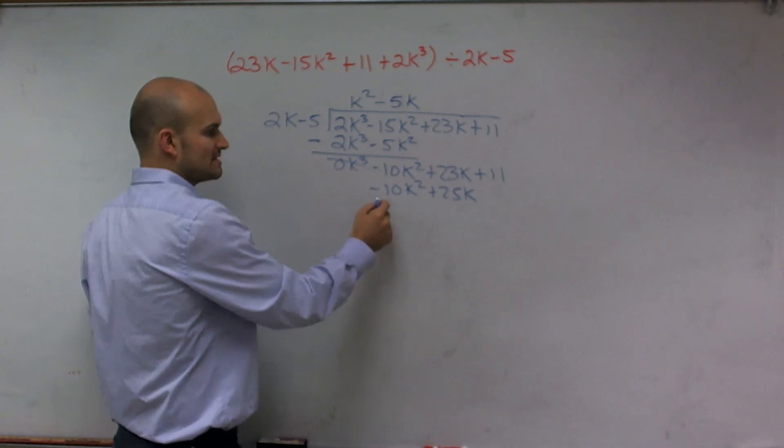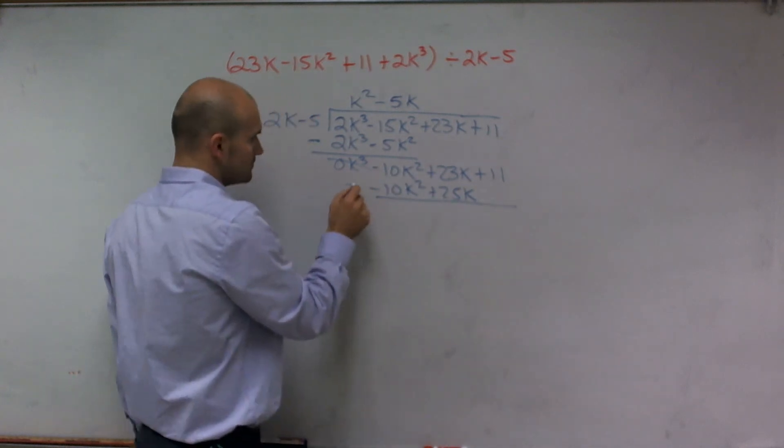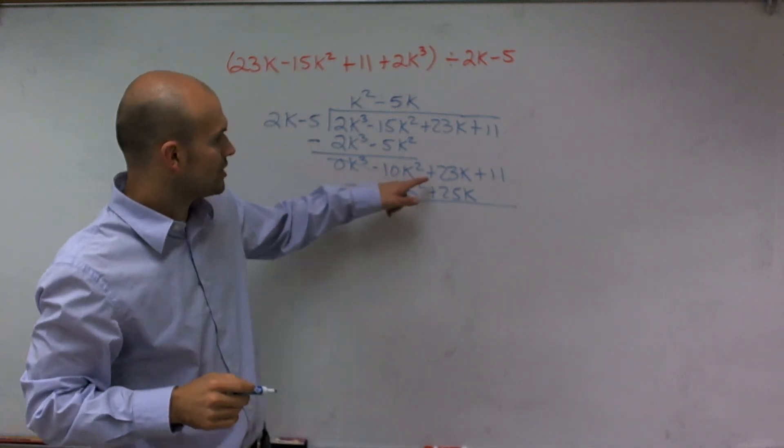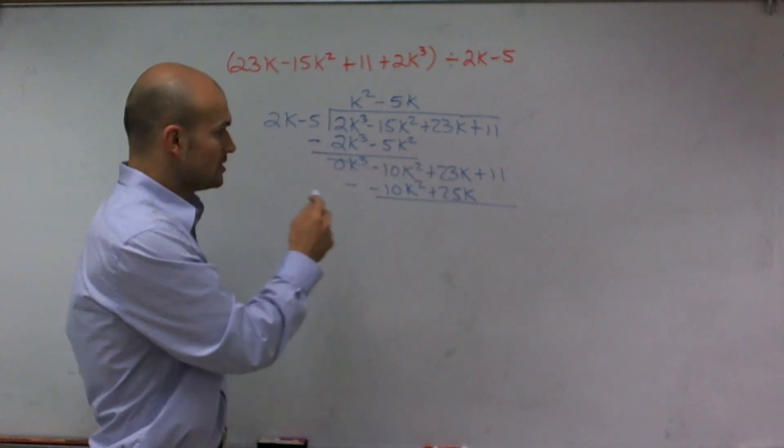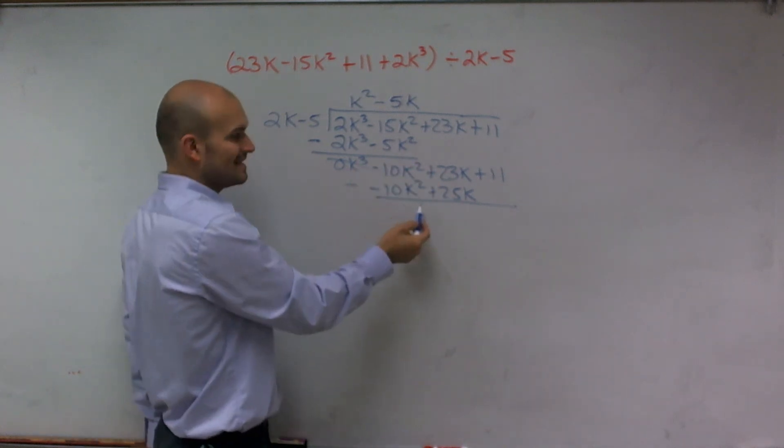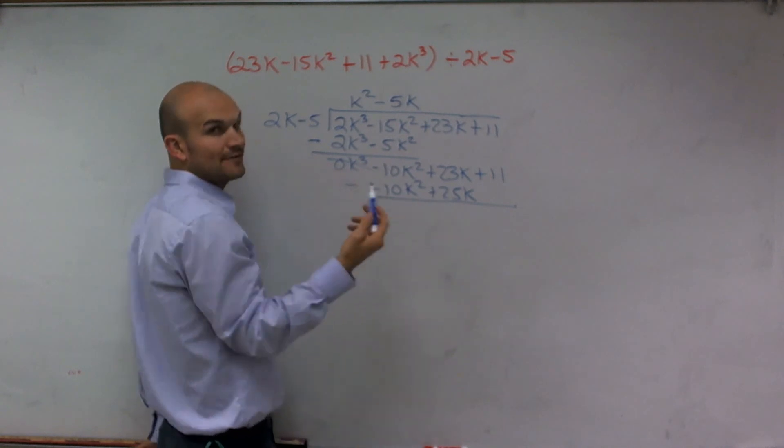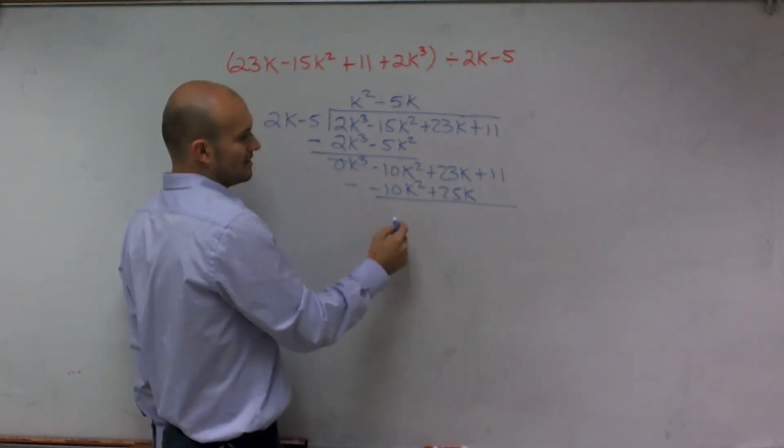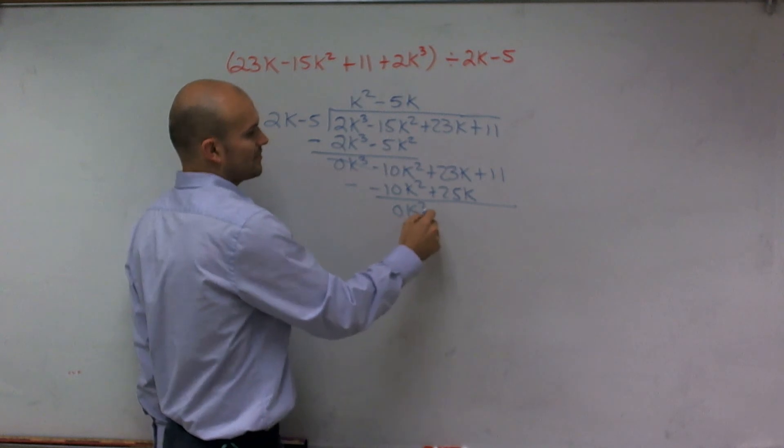Then, again, we're going to do the same operation. Subtract all of my terms from the bottom from the top. So negative 10k squared minus a negative 10k squared is now going to be a double negative and give me a positive. So negative 10 plus 10 is now going to give me a 0k squared.